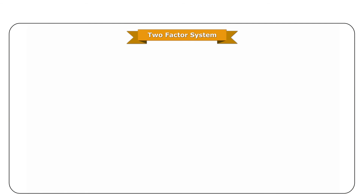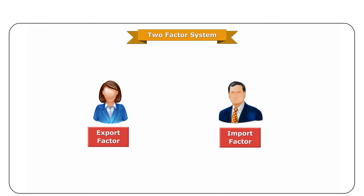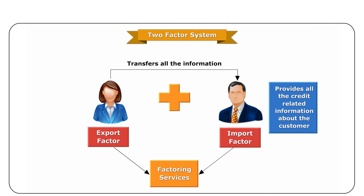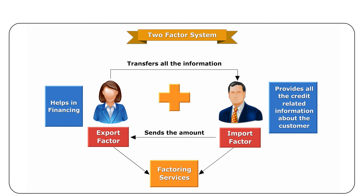Let us have a brief view of how factoring services are managed and how they help international business. The two-factor system is the most common and effective factoring arrangement. In this case, an import factor and an export factor simultaneously perform factoring services. The export factor transfers all information to the import factor. The import factor provides all credit-related information about the customer. The export factor helps in financing, and the import factor helps in collection and sends the amount back to the export factor.